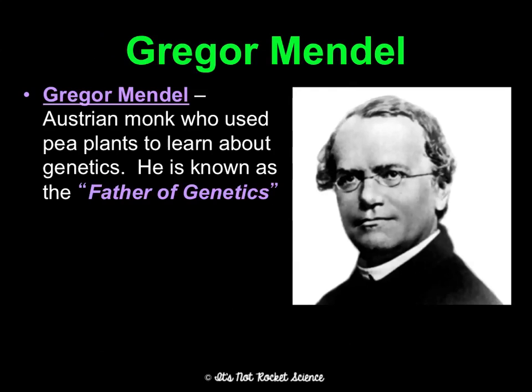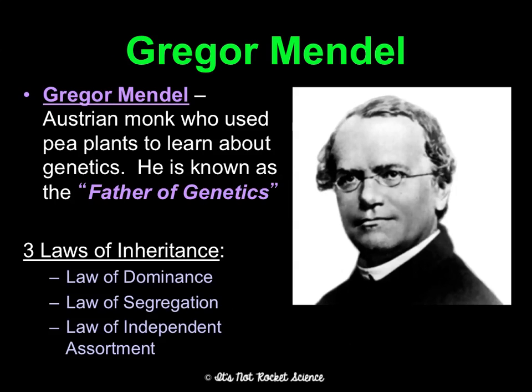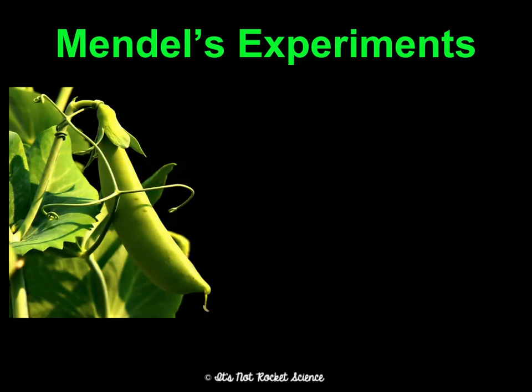Gregor Mendel was an Austrian monk, and he studied pea plants to learn what we basically know today as the foundation of genetics and inheritance. He's known as the father of genetics, and he came up with three laws of inheritance: the law of dominance, law of segregation, and law of independent assortment. We're going to go through each of these, but first I want to talk about his experiments so you can understand the legitimacy of them and how he figured out what he figured out.